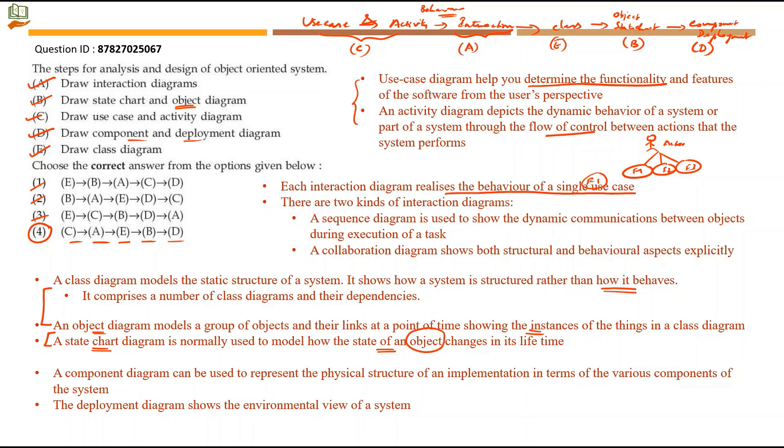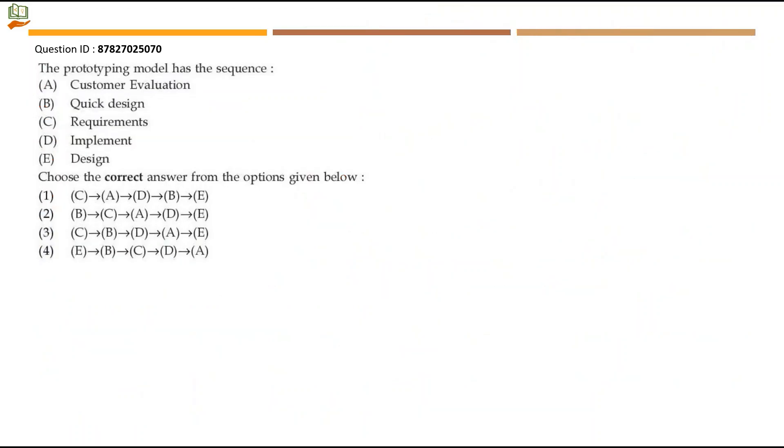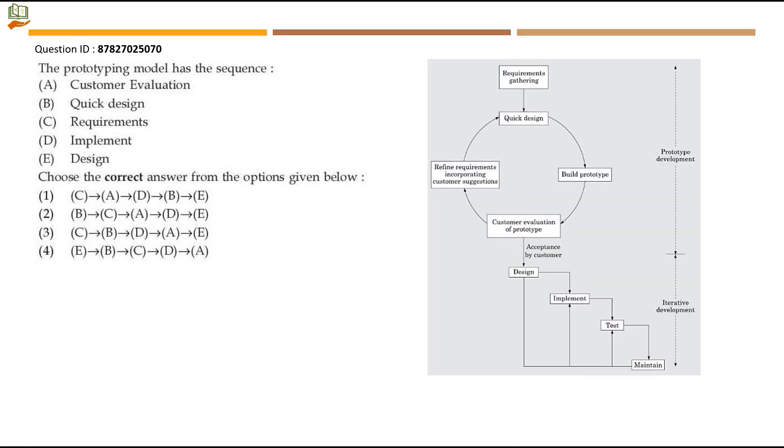Next question: The prototyping model has the sequence. Let's take this prototyping model. This is taken from an older edition of the same software engineering book. First we have requirements gathering. From that we enter a cycle here. In this cycle we have quick design, building prototype, customer evaluation of that particular prototype, and we refine requirements using the customer suggestions. Then we go on designing again and again. When the customer accepted it, we go for general design, general implementation, general testing, and maintenance of the particular project. So they say the prototype development will be till here, and after that this goes as iterative development because we keep on refining things.